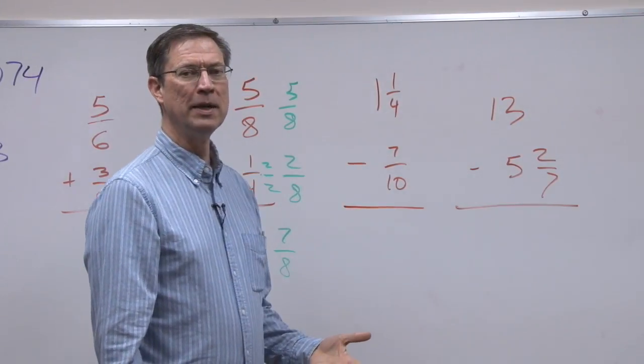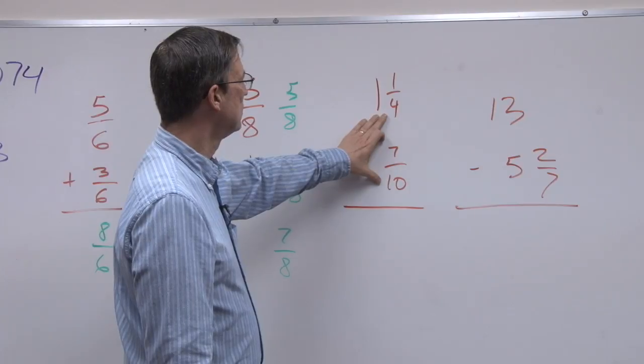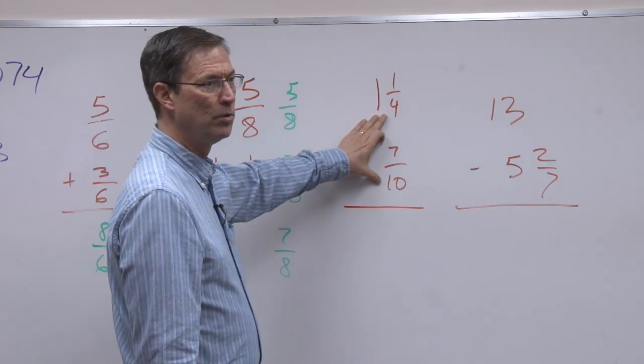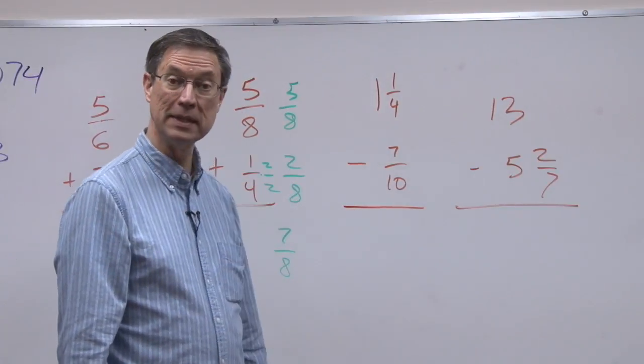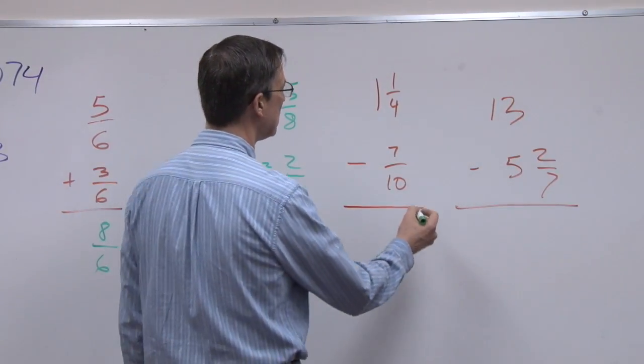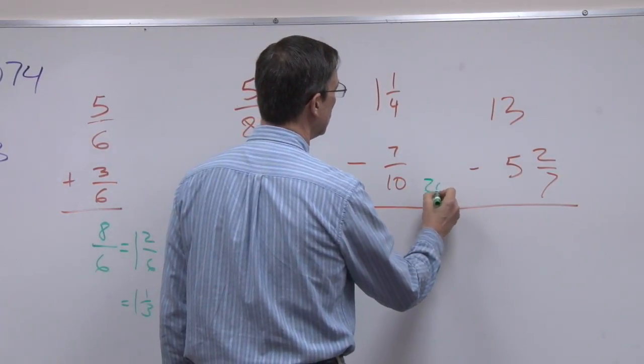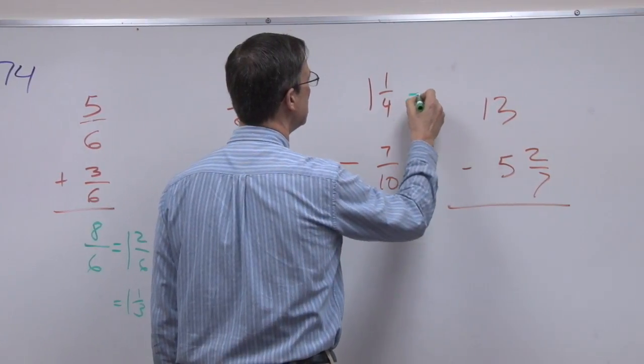But it's kind of a mind game. So you might try 40, but then ask yourself, can I think of something smaller than that? And yes, in this case, we can come up with 20. 20 would be in common to both. So I'm going to use 20 as the denominator.